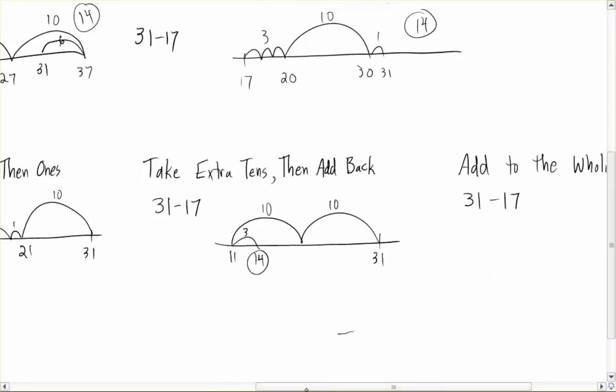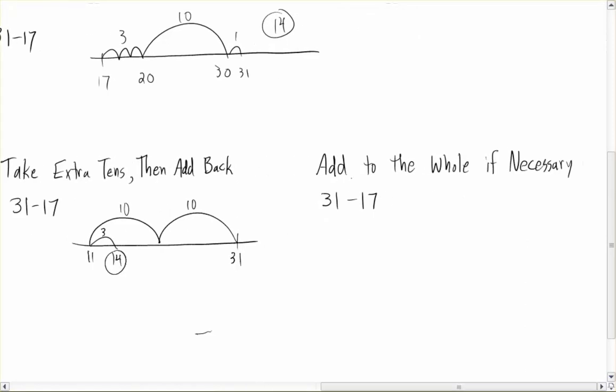And the last strategy is to add to the whole if necessary. This one's a little bit different, but here I'm saying, it's not very easy to take 17 from 31, but it's pretty easy to take 17 from 37. So if I jump up 6, what's 17 from 37? Oh, I know that's 20.